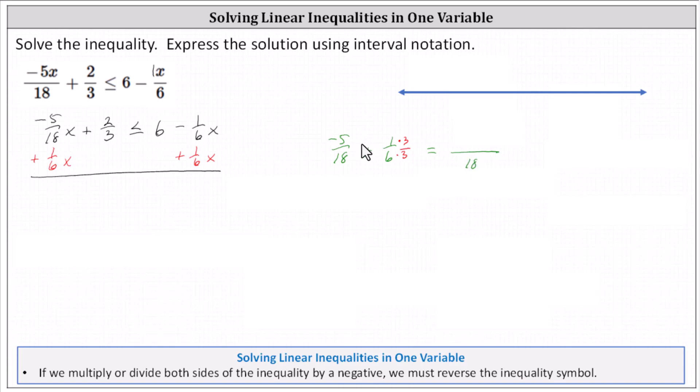Notice now we have a common denominator of 18. In the numerator we have -5 + 3, which is equal to -2, giving us -2/18, which simplifies to -1/9. And therefore, this indicates that -5/18 x + 1/6 x is equal to -1/9 x.